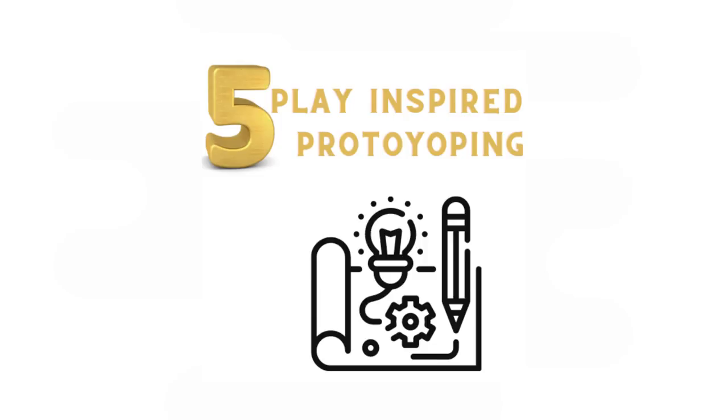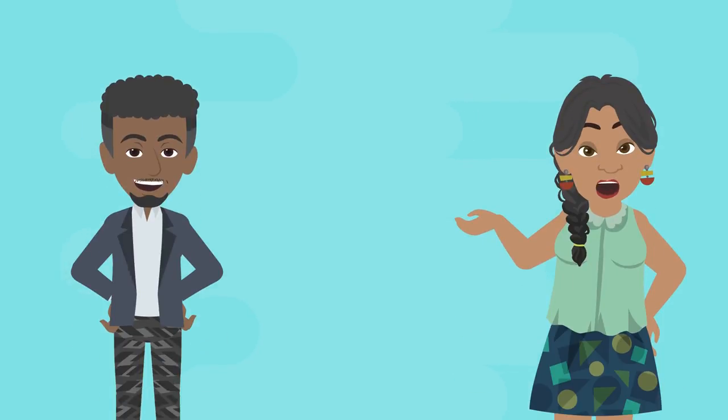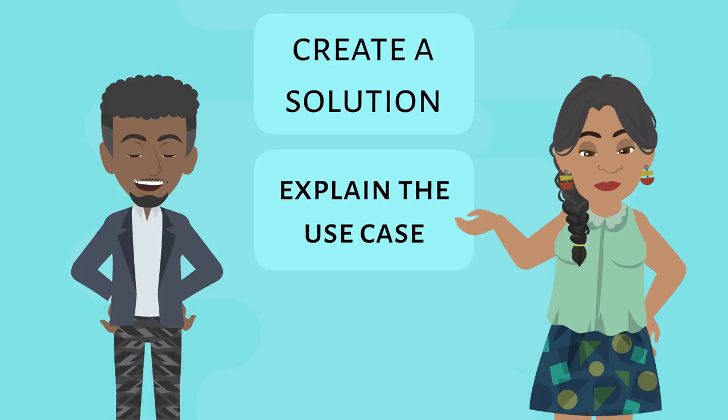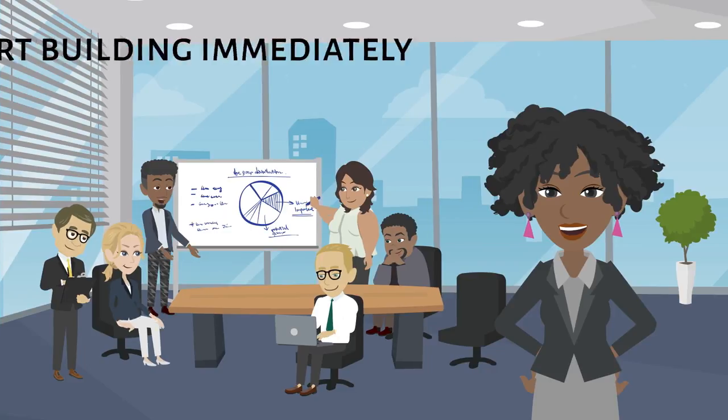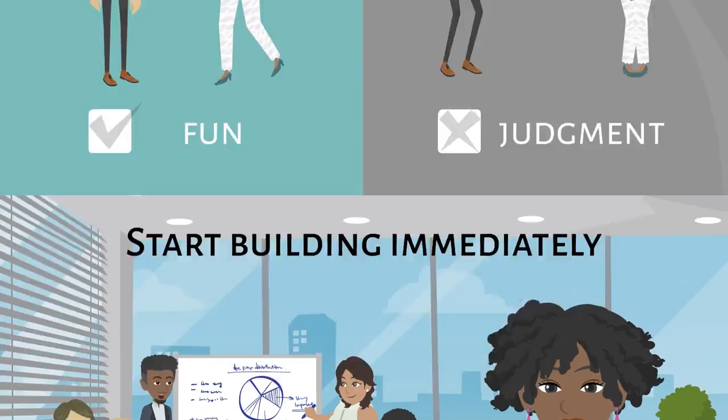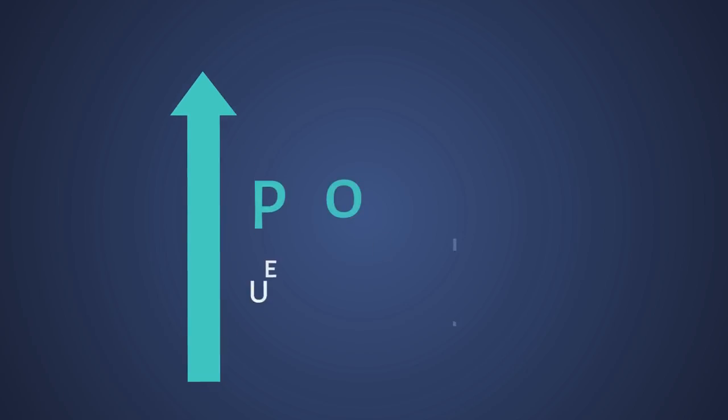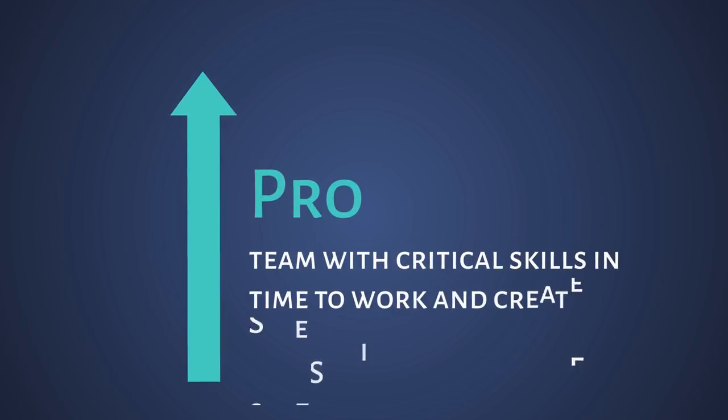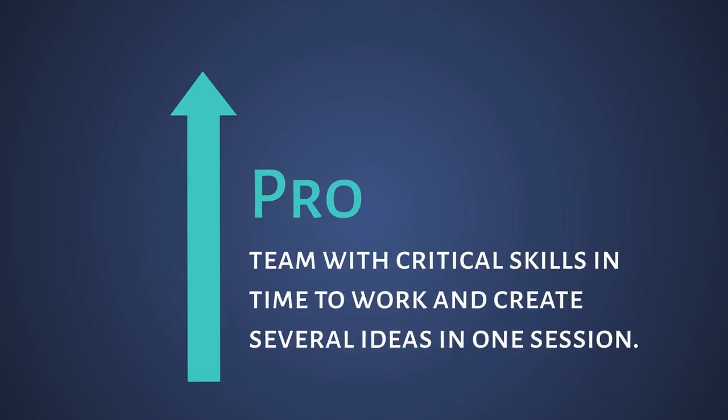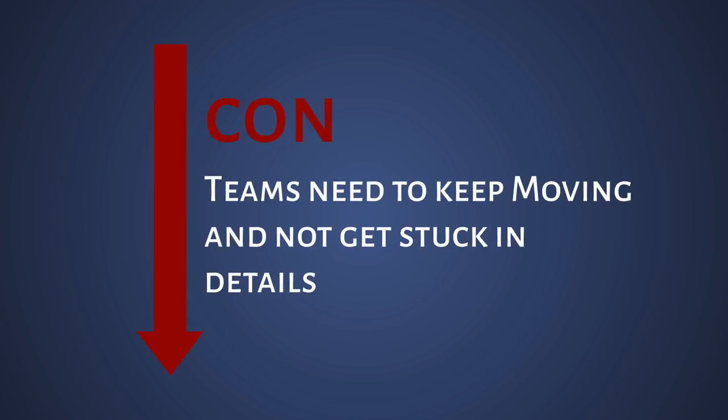Technique number five: inspired prototyping. Let the process of building take over for a moment. First, create a solution. Then, explain the use case and how the idea relates to the topic. The key here is to let the team start building immediately. The focus is on fun and no judgment. Pros to this process is that the team with critical skills and time to work can create several ideas in one session. The con is that the teams need to keep moving and not get stuck in details.